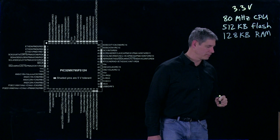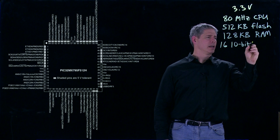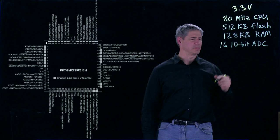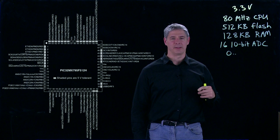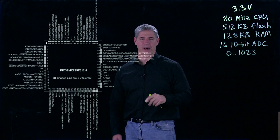It has 16 10-bit analog to digital conversion inputs. 10 bits means it can read values between 0 and 2^10 minus 1, or 1023. So it can read 1024 different values between two voltages, typically 0 and 3.3 volts.